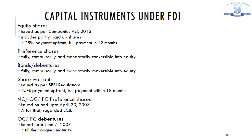Under the 2017 regulations, non-convertible, optionally convertible, or partially convertible preference shares issued up to April 30, 2007 are considered as FDI, while those issued thereafter are regarded as external commercial borrowings. Similarly, optionally convertible and partially convertible debentures issued till June 7, 2007 are considered FDI, and those issued thereafter are regarded as external commercial borrowings.